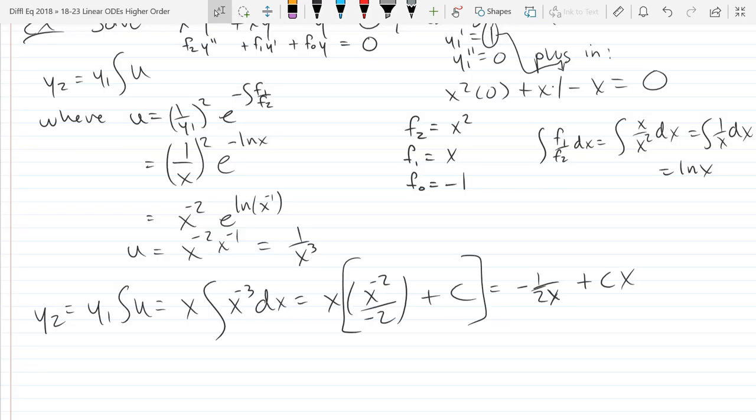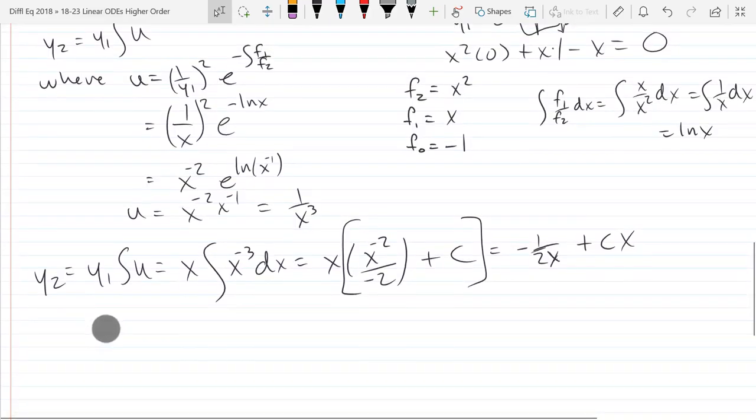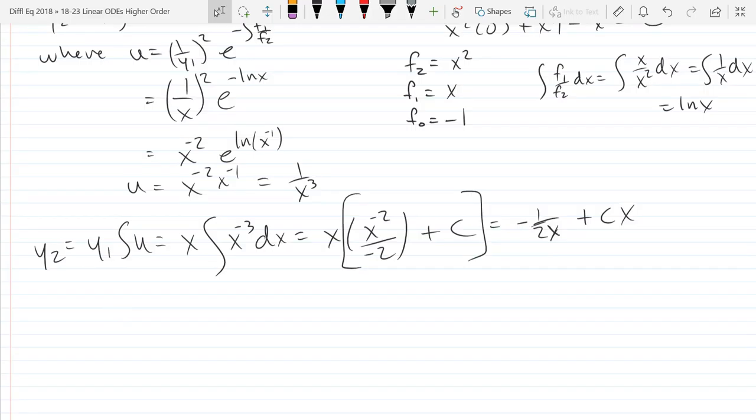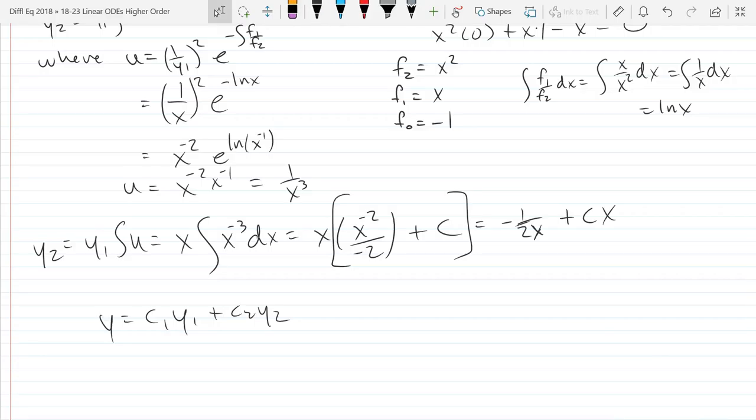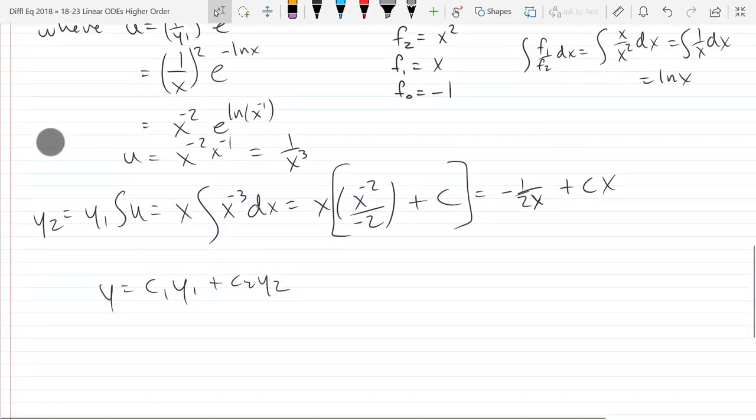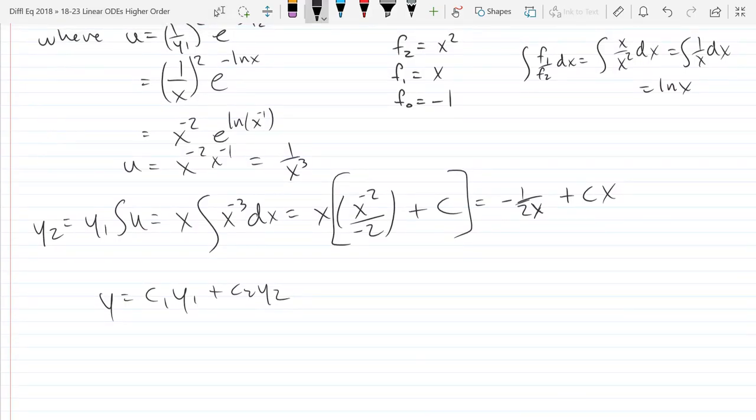The general solution is just C1 Y1 plus C2 Y2. I need two constants, so normally it looks like C1 Y1 plus C2 Y2. If we go that route, I won't need this extra CX right here.